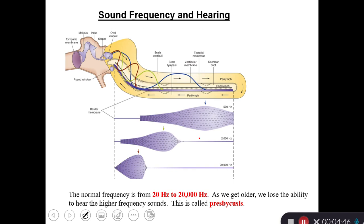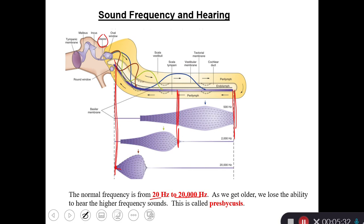We as humans are able to hear sounds of frequencies ranging from 20 to 20,000 hertz. High-pitched sounds with higher frequency stimulate the cochlear duct closer to the stapes. Low-pitched sounds of low frequency stimulate the cochlear duct away from the stapes. Medium-pitched sounds stimulate the cochlear duct midway between the high and low frequency regions. This way we are able to distinguish between different sounds.